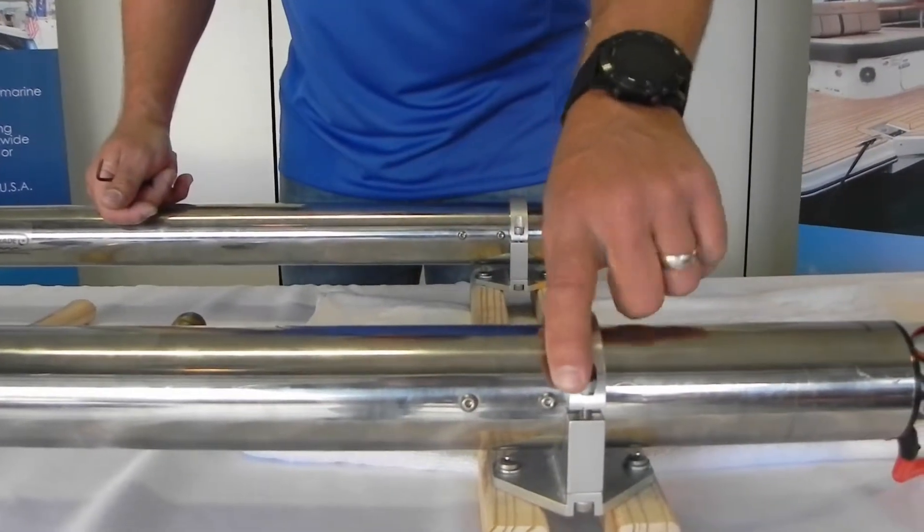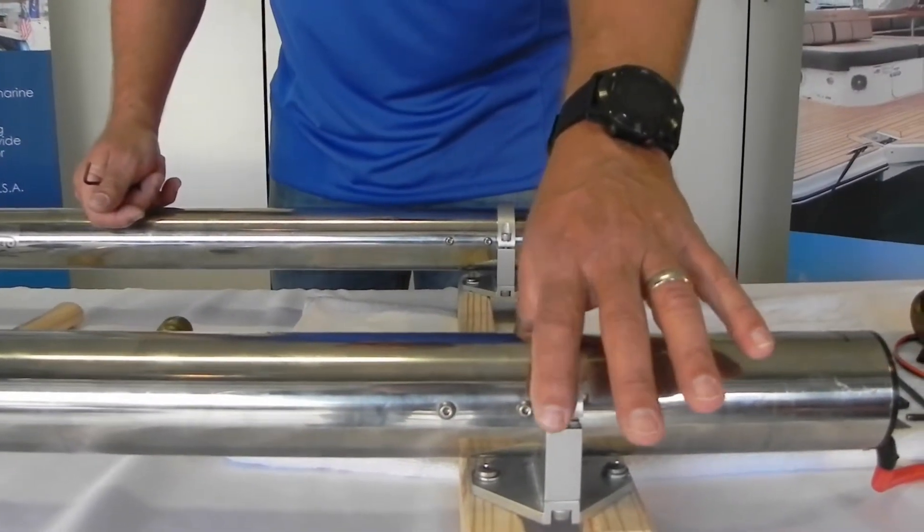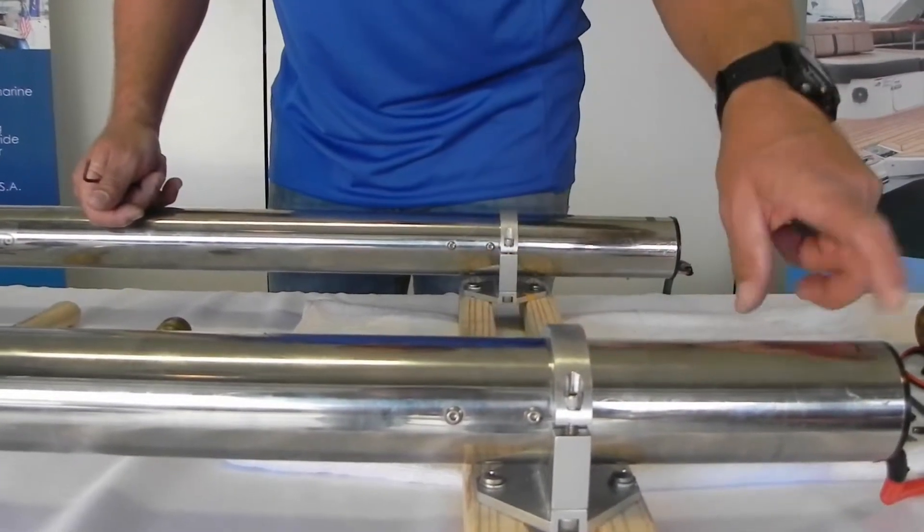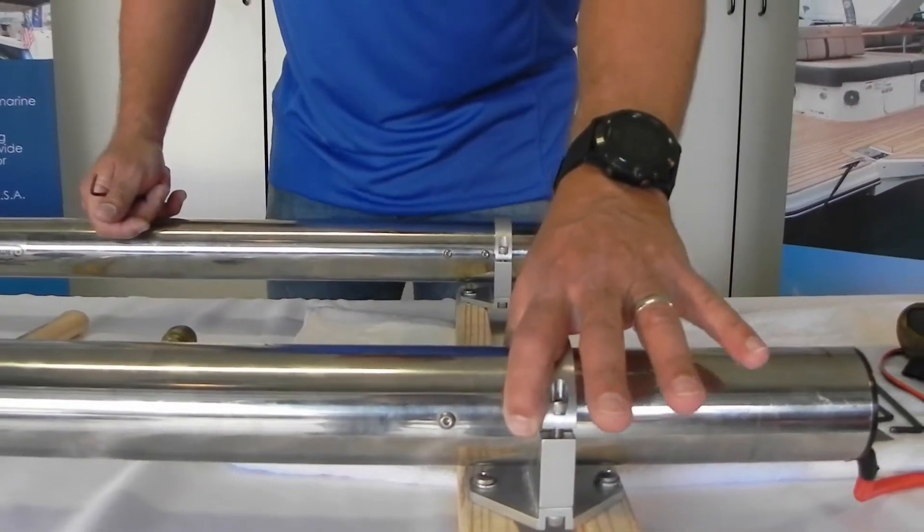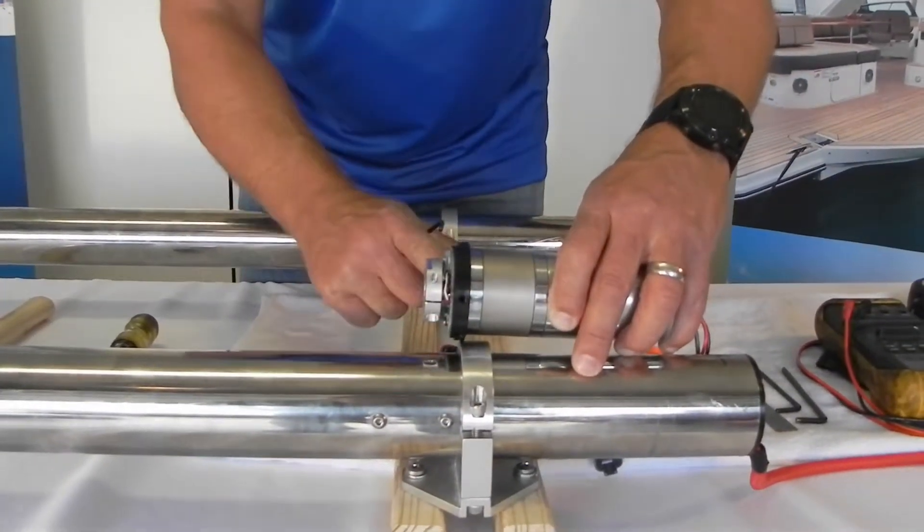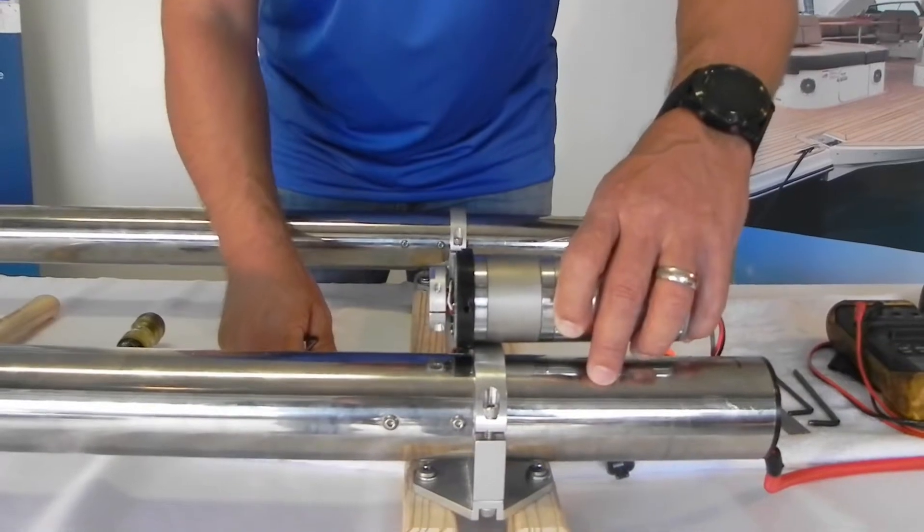So the two screws that are forward is going to be this one and then on the other side of the tube, this one here, closest to the black cap. Those are the two that are holding your motor into the tube. This is the way it sits inside the tube.